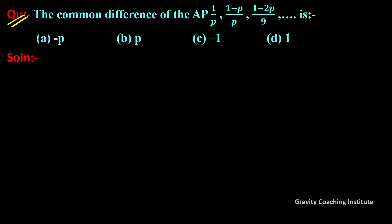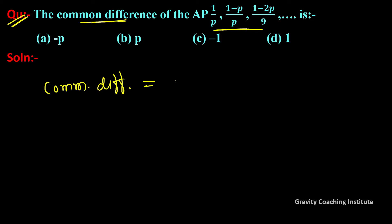The question asks for the common difference of the AP: 1/p, (1-p)/p, (1-2p)/p. To find the common difference, we calculate the difference between two consecutive terms, so common difference equals a2 minus a1.